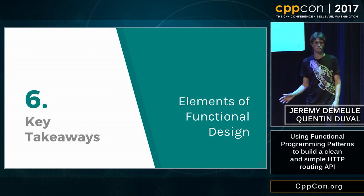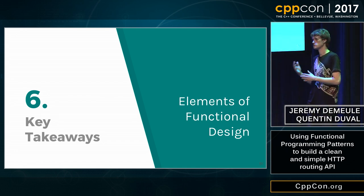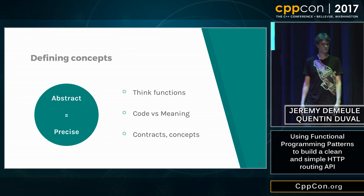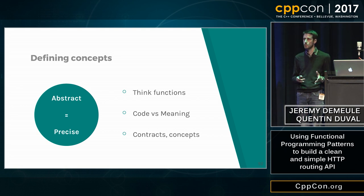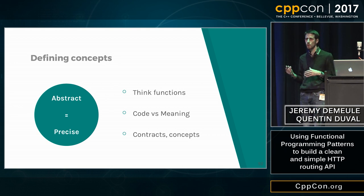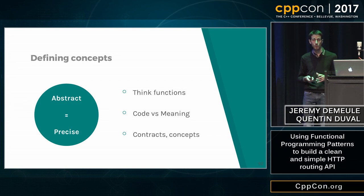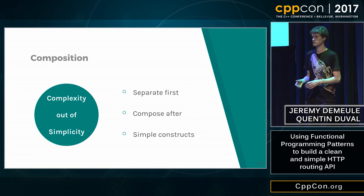With that, we've presented basically the API and what it looks like. We'd like to give you some takeaways that can be transposed and used in other contexts. The first one is to define the concepts — very abstract but very precise — and apply them to your domain. Think of them as pure functions: they do one thing, but one thing well. Don't let the code disturb you; think at a very high level, then in a second step try to apply it to the code. C++ concepts and contracts will help us a lot in the future. The second big idea is composition. One of the key principles of functional programming is trying to have separate blocks. We try to keep our concepts separate, and then find ways to compose them.